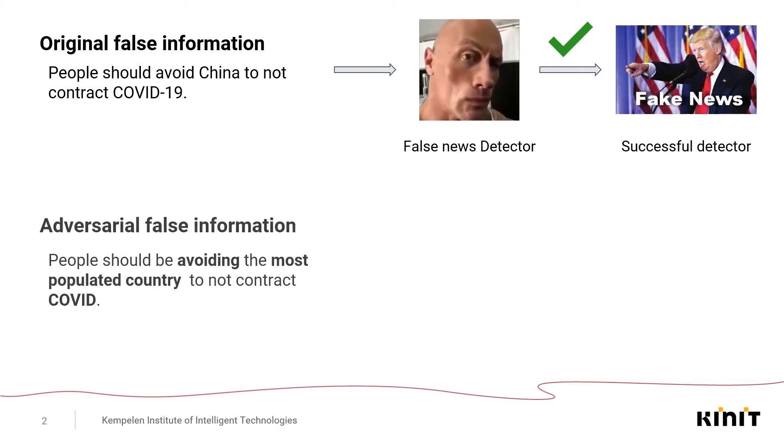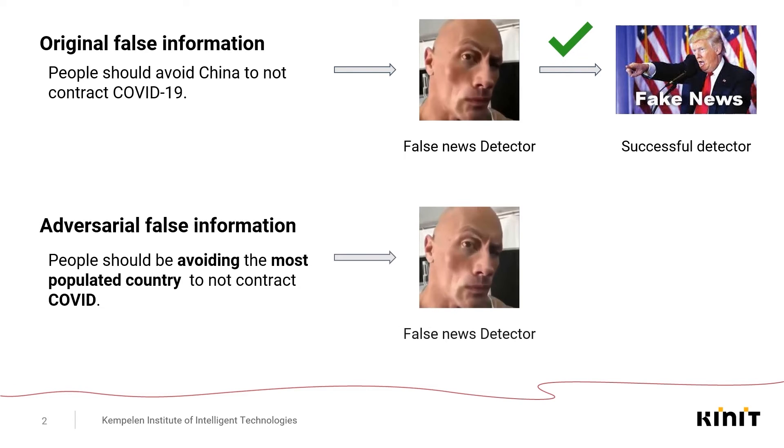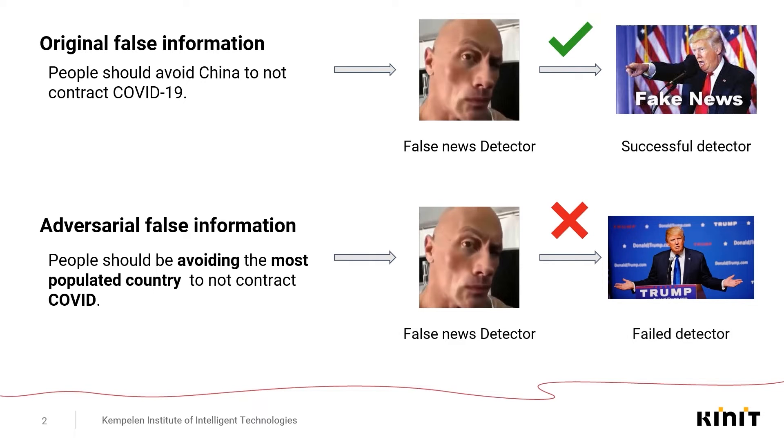So what would happen if we were to tamper with the given sample? Let's say that we change it to: people should be avoiding the most populated country to not contract COVID. Now if we change it this way, the detector might have real issues with correctly predicting if the given information is false or real. We call these kinds of samples adversarial. They help us in revealing the given weakness of a model. We might either use it to attack a model or increase its robustness by creating these samples and then using them as training data.